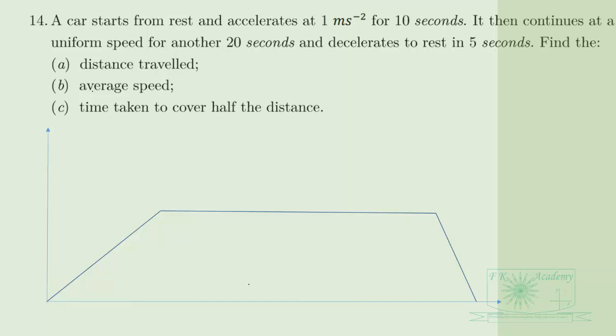The area under the velocity-time graph is the area of a trapezium — the trapezium you are seeing here. So we need to find the parallel sides and add them. The area of a trapezium gives the distance: it is one-half times the vertical height times the sum of the bases.